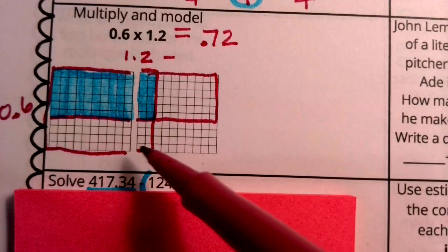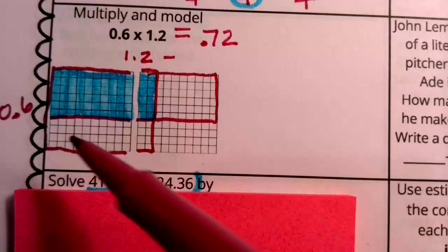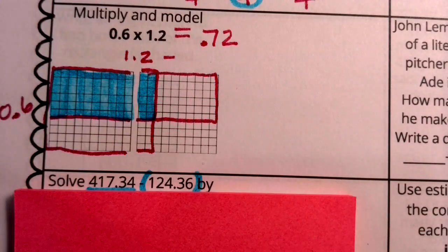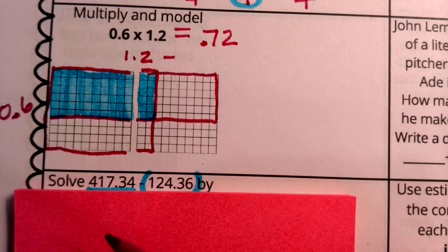So I'm not going to highlight this because that didn't overlap with my one and two tenths. I'm not going to highlight this because that did not overlap with my six tenths. I'm only highlighting this area.